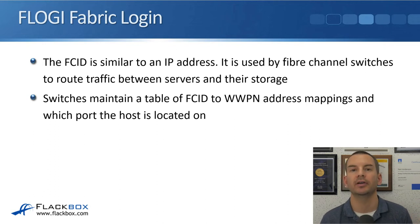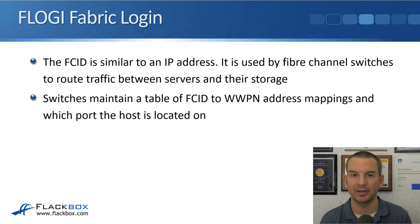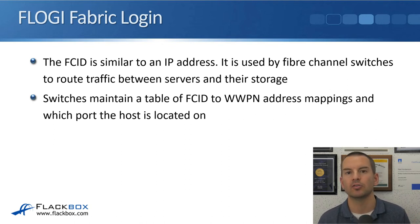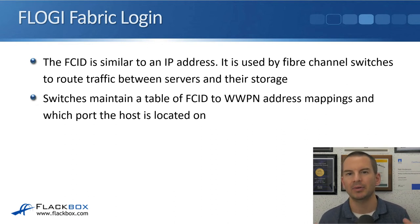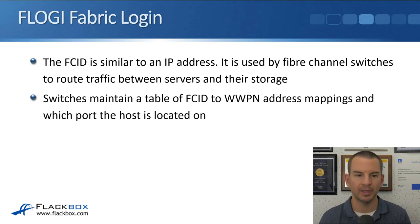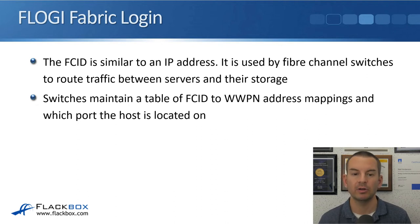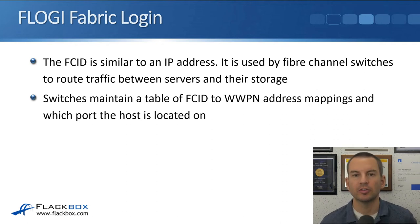We mentioned in the earlier lecture that a WWPN is pretty much exactly like a MAC address in Ethernet. An FCID does the same job as an IP address — it's an address that's used to route traffic around, but it doesn't work quite the same way as an IP address. The FCID is used by Fibre Channel switches to route traffic between servers and their storage, and switches maintain a table of FCID to WWPN address mappings and which port the host is located on.